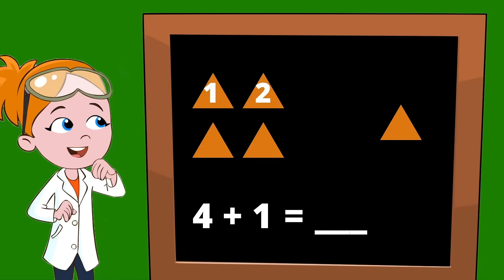One, two, three, four, five. Now there are five triangles and there's your answer. Five. That wasn't so hard was it?